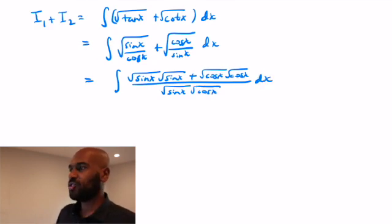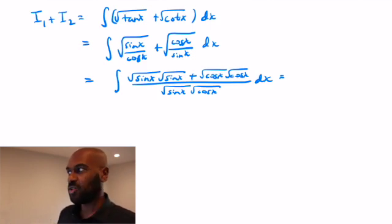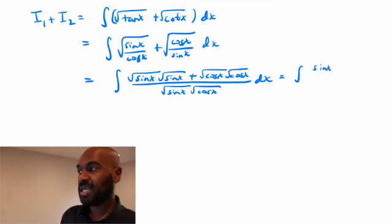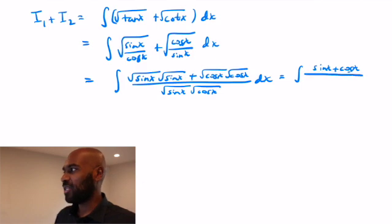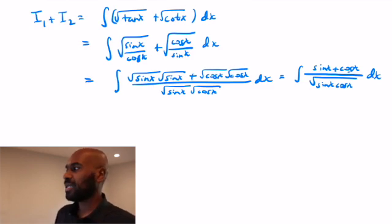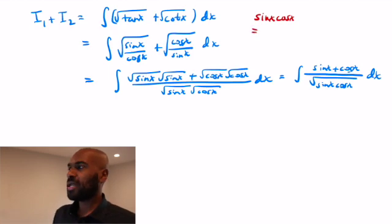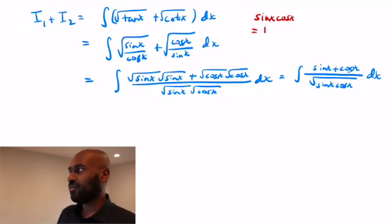Luckily, the two square root factors being multiplied cancel out, so we're left with sine x plus cosine x in the numerator. But we still have the square root of sine x times cosine x in the denominator. It would be nice to express that sine cosine in the denominator in terms of something like sine minus cosine, because that will help with a substitution.